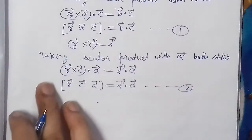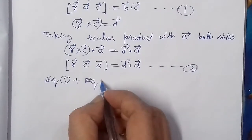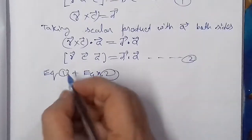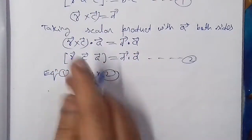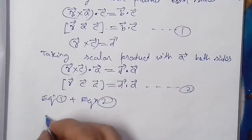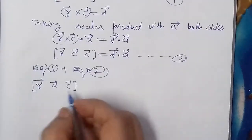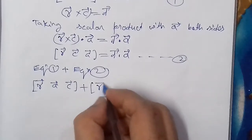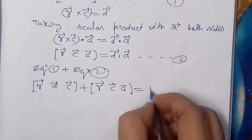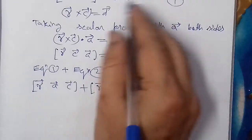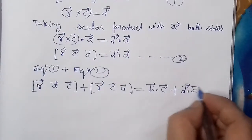अब इन दोनों equations को add कर देंगे। Left को left में और right को right में जोड़ देंगे। Equation 1 का left hand side [R⃗, A⃗, C⃗] और equation 2 का left hand side [R⃗, C⃗, A⃗]; right hand side में B⃗ · C⃗ + D⃗ · A⃗।